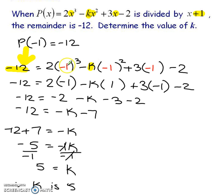Let's simplify everything. Negative 1 cubed is negative 1. Negative 1 squared is positive 1. The negative 1 stays the same. Now multiply the 2 and the negative 1. Multiply the k and the 1. The 3 and the negative 1. And then bring down that negative 2. Then we're going to start to simplify.